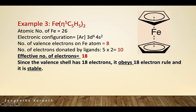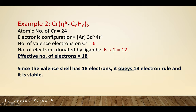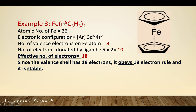Example 3: Ferrocene — iron coordinated with two cyclopentadienyl rings in η5 fashion. The atomic number of iron is 26, and the number of valence electrons is 8. Each η5-Cp ligand donates 5 electrons; with 2 ligands, that gives 10. So 8 + 10 = 18. Ferrocene obeys the 18 electron rule and is thermodynamically stable.